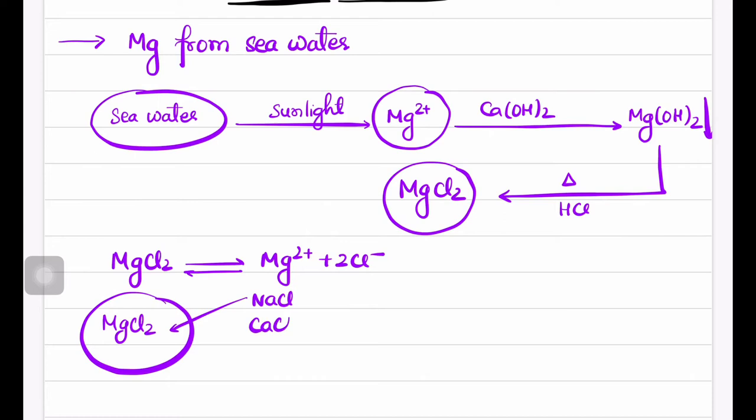These ions increase the conductivity of the molten MgCl2 as well as decrease the melting point. The final mixture is around 35% MgCl2, 50% NaCl, and approximately 15% CaCl2.